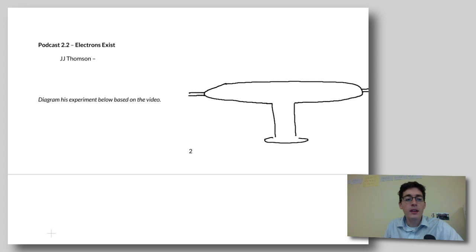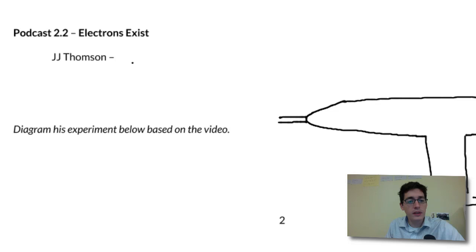As I scroll down, that showed the existence of these things called electrons, or what he called electrons. J.J. Thompson was a scientist, and he did the cathode ray experiment.